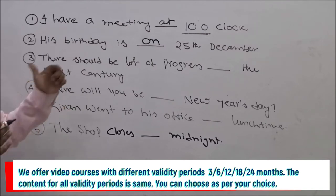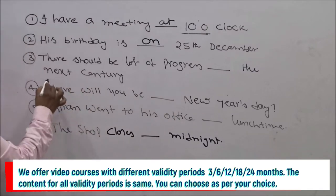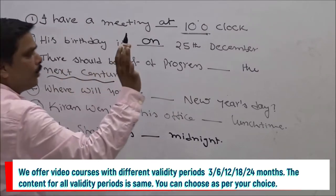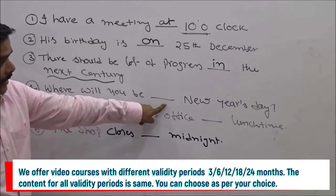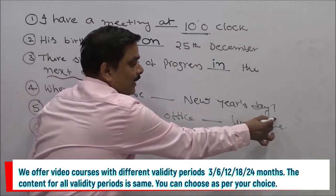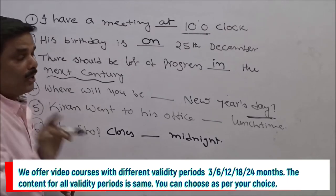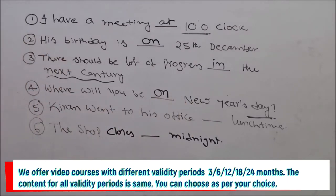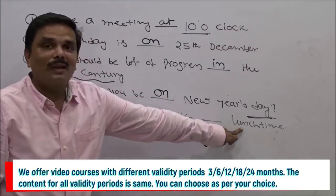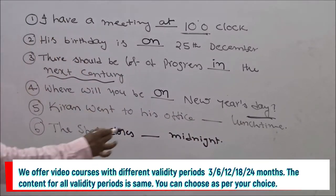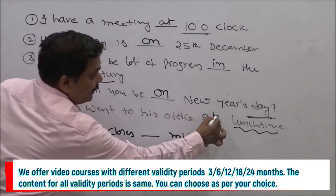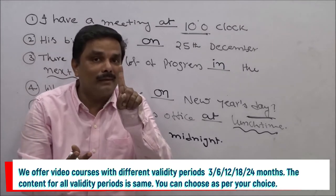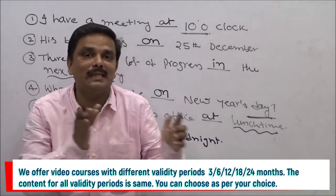'The shop closes ___ midnight.' Midnight is a specific time, so: 'the shop closes at midnight.' You should not say 'on midnight' — that is wrong. 'On' is used for days or dates. The correct usage is 'at midnight.' So at is for specific times; on is for days and dates; in is for longer periods. Summary: 'I'll meet you at 10 o'clock' — specific time. 'My birthday is on 25th December' — day or date given. 'In the next century' — longer period.